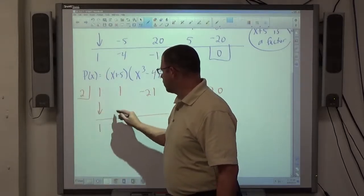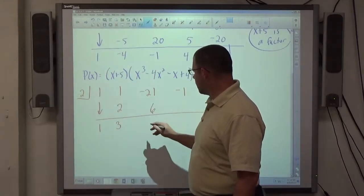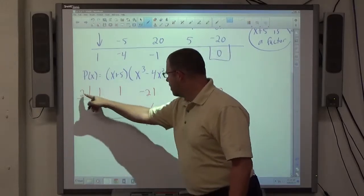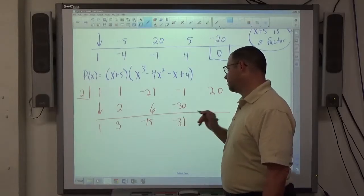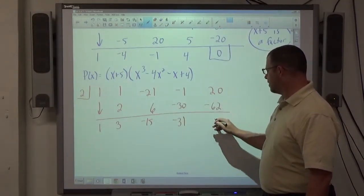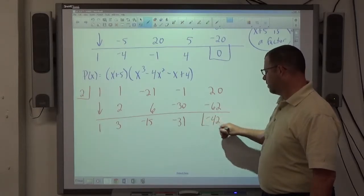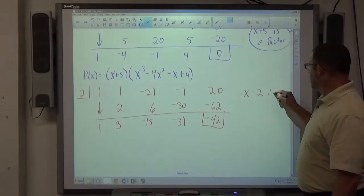I'm going to bring the 1 straight down. 2 times 1 is 2. 1 plus 2 is 3. 2 times 3 is 6. Negative 21 and 6 is negative 15. 2 times negative 15 is negative 30. Negative 1 and negative 30 means negative 31. 2 and negative 31 is negative 62. 20 minus 62 is negative 42. Remainder is not 0, so x minus 2 is not a factor.